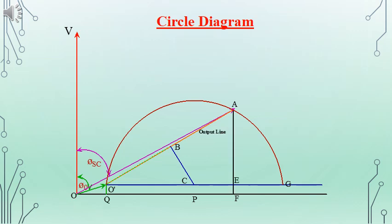If you draw a perpendicular from O' to the line OF, the length O'Q will be the no-load active component of current, that is IW, which corresponds to the friction and windage losses or the constant losses in the induction machine. Equivalently, O'Q is the active component of the no-load current OO', that is I0.